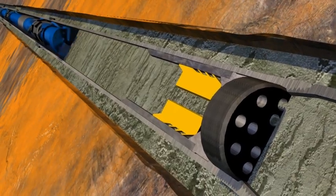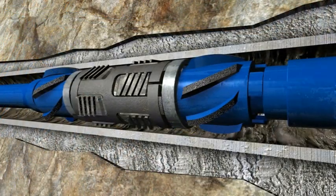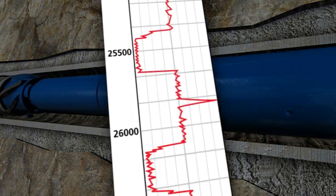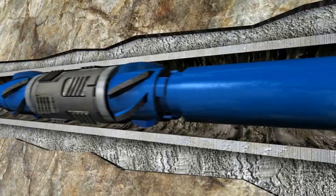This one trip bottom hole assembly enables the operator to effectively and safely mill cement, clean the casing, and obtain a gamma ray correlation log, eliminating the need for wireline logging and subsequent clean out trips.